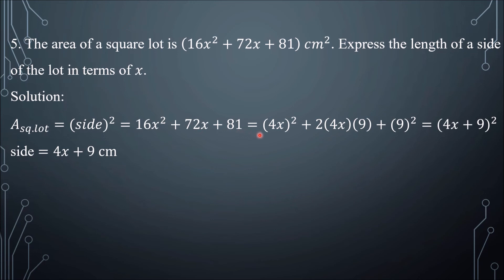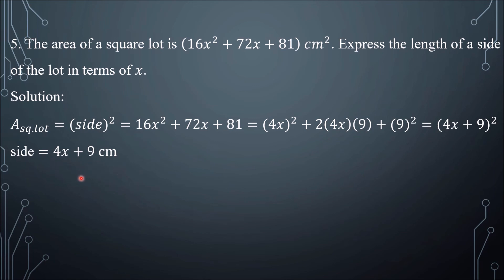To factor this perfect square trinomial: 4x squared gives 16x squared; 2 times 4x times 9 equals 72x; and 9 squared is 81. Simplifying, the first term is 4x and the last term is 9, so we have (4x plus 9) squared — that is side squared. Therefore, the side of the square lot is 4x plus 9 cm.